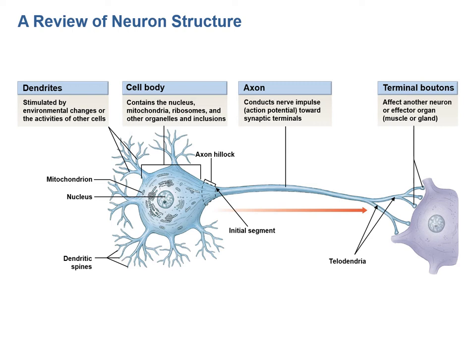A typical neuron intakes information via dendrites, which are stimulated by environmental changes or the activities of other cells. It transfers that information electrically via the cell body and then out through the axon. The axon is an extended process that comes out of the cell and branches towards another cell, ending in the telodendria and terminal boutons, which affect another neuron or effector organ by sending the signal toward that cell.